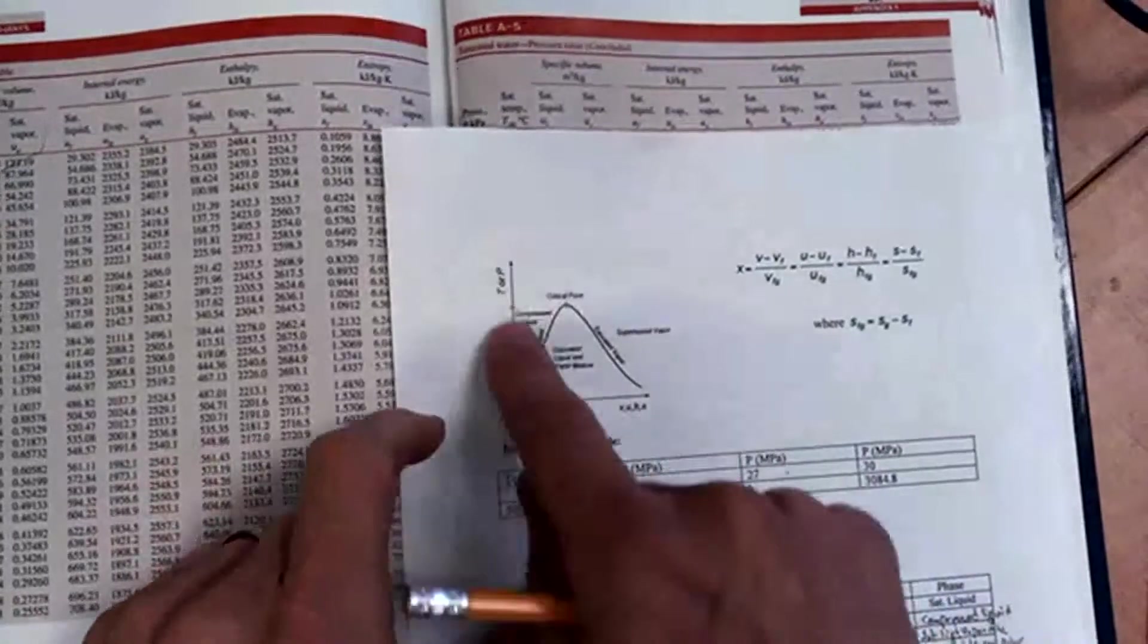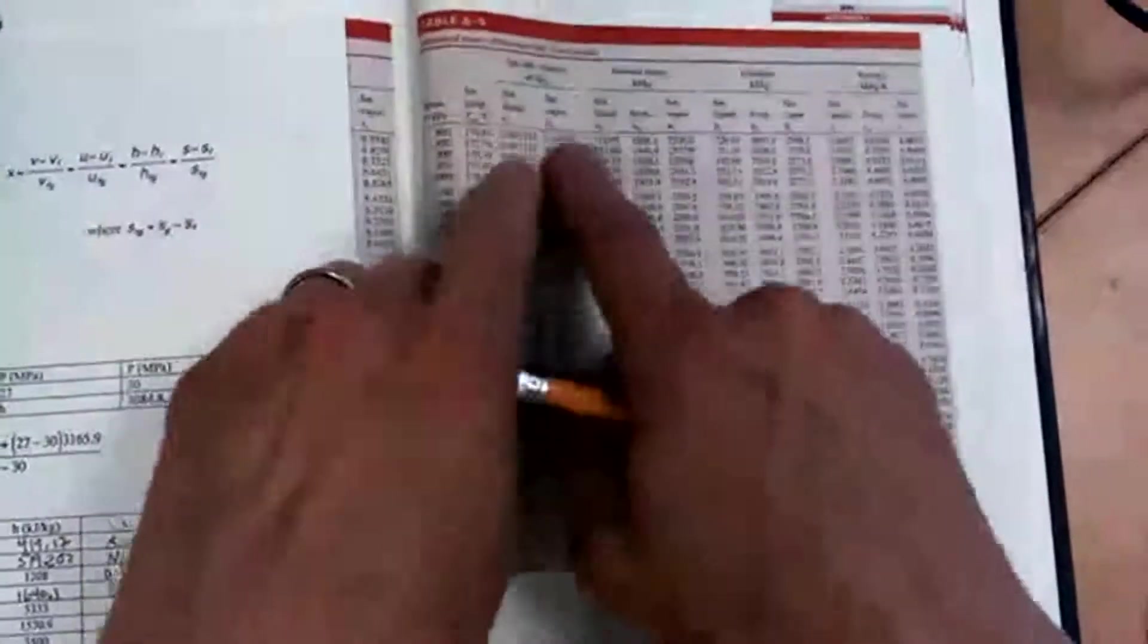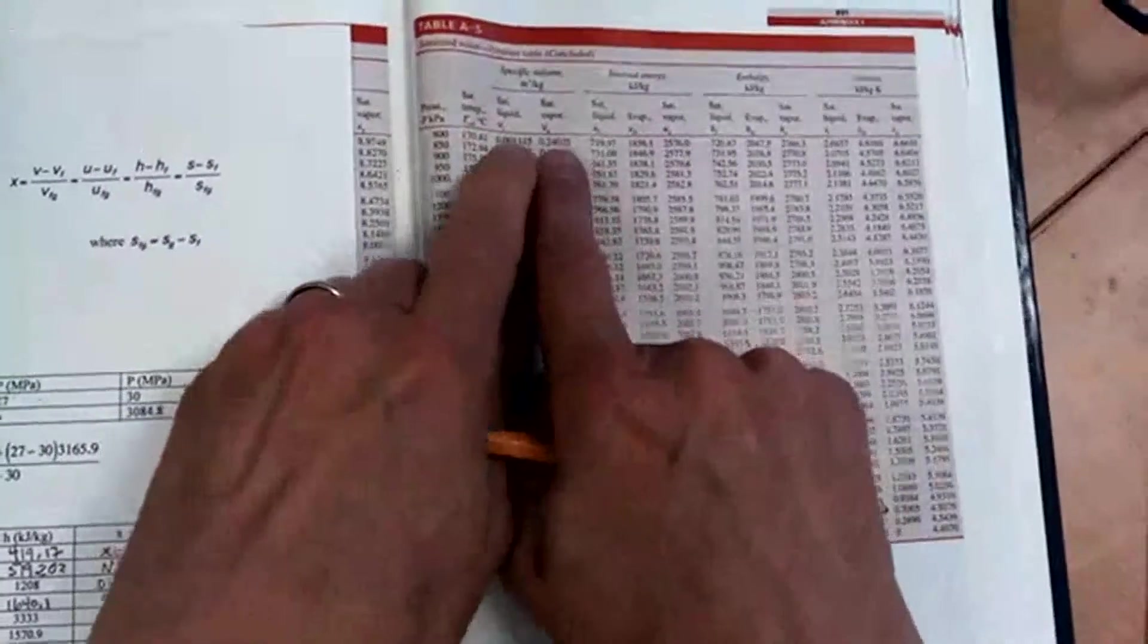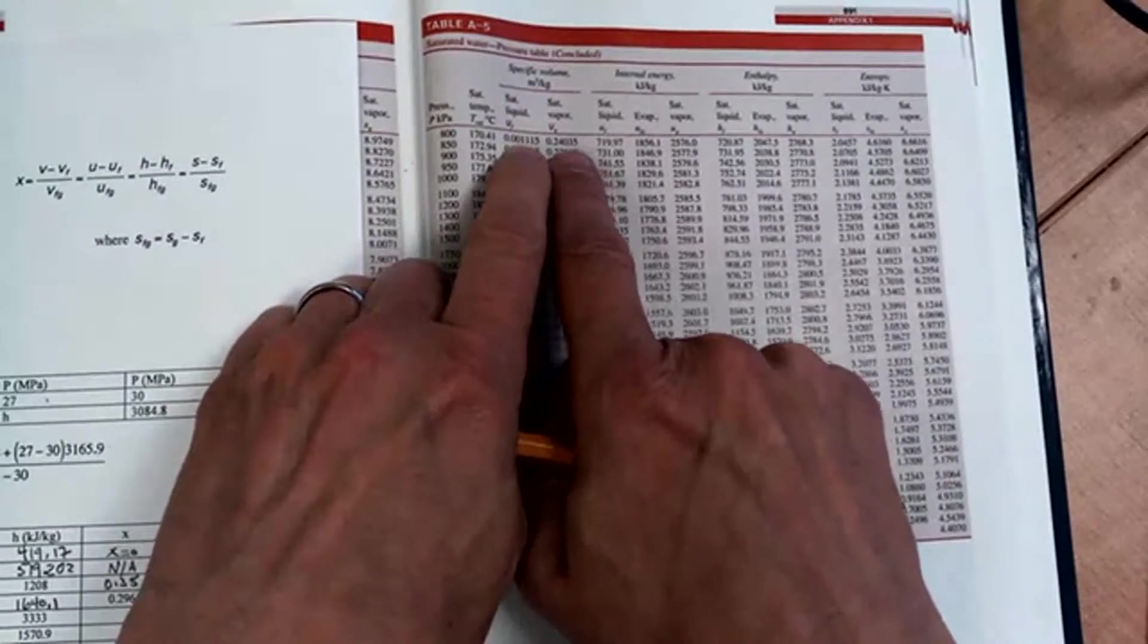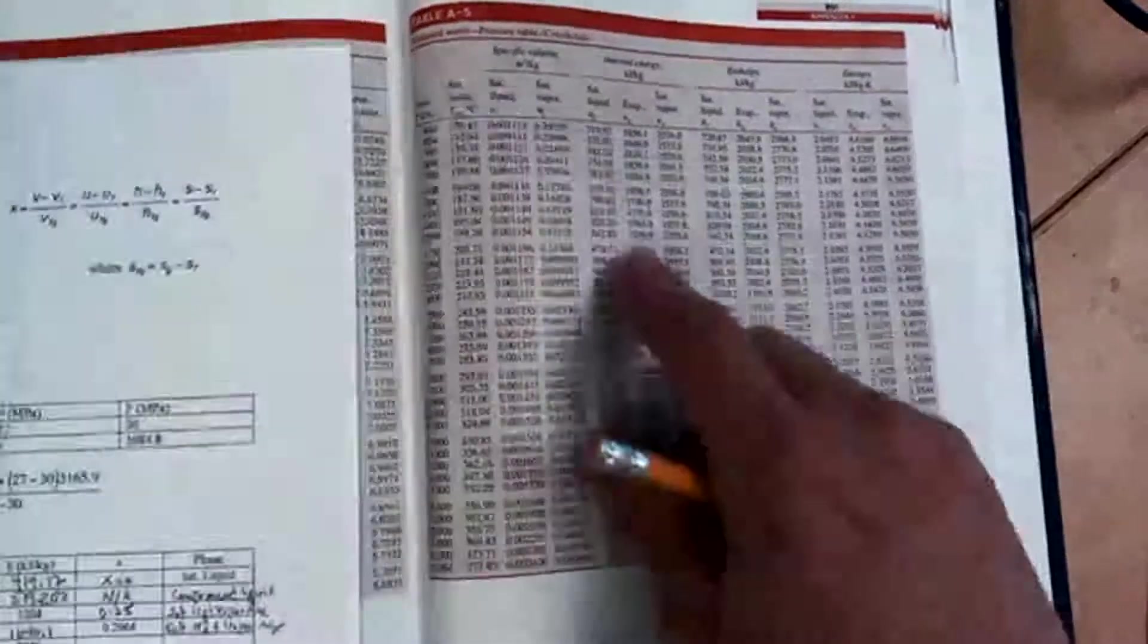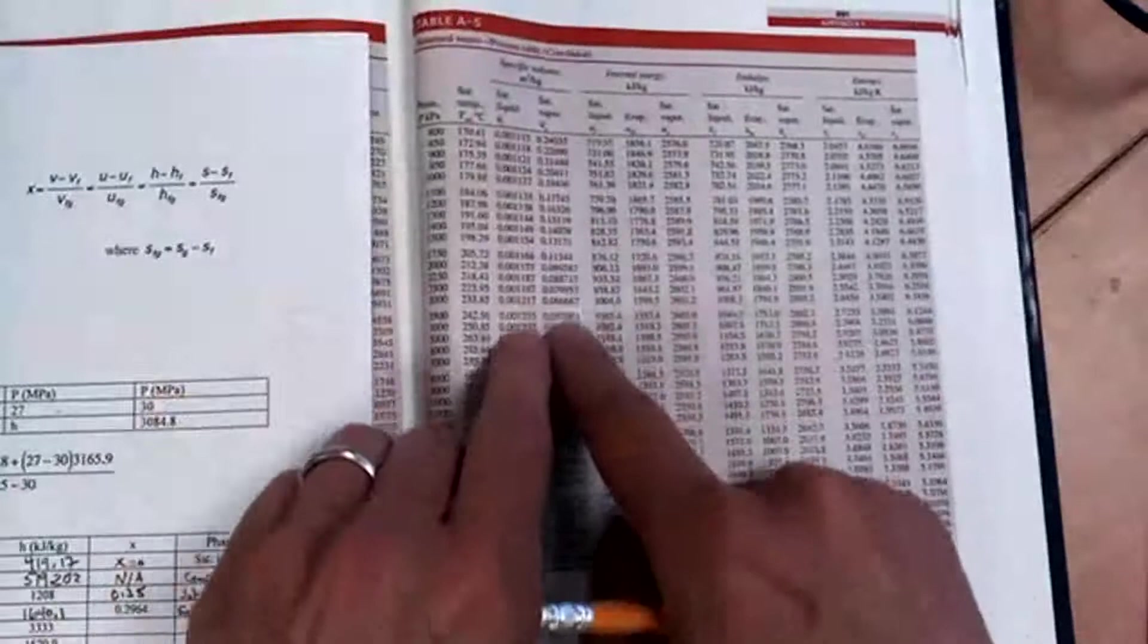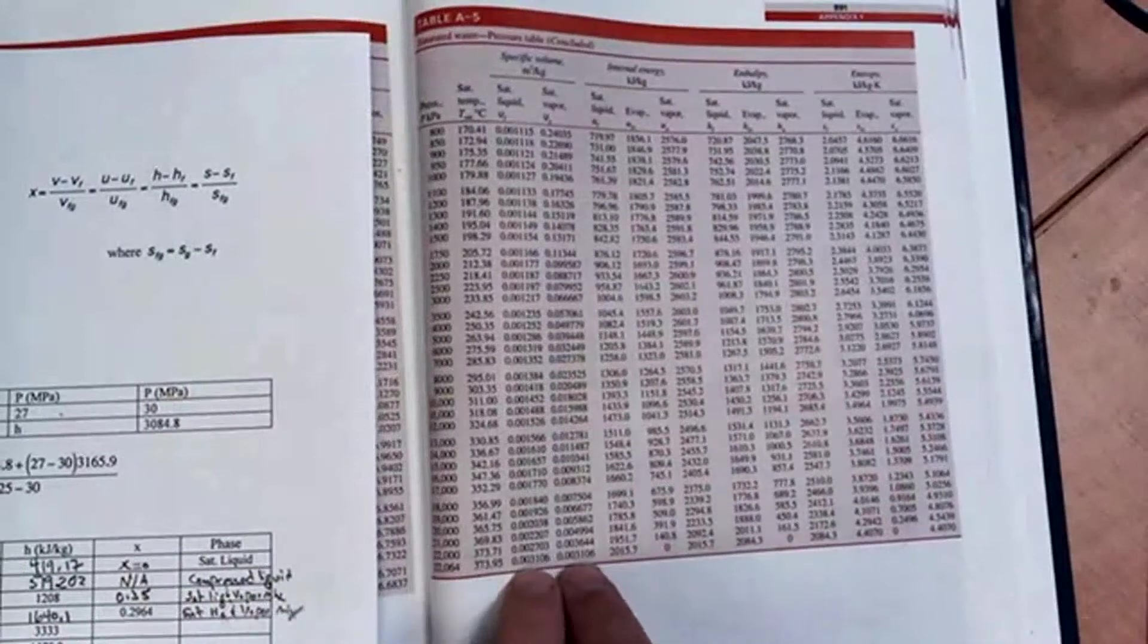As you go up in pressure or temperature, these two saturation lines begin to approach each other. And if you look at this table, you can see that the numbers are quite different, 0.0011115 versus 0.42035. That's because we're over here somewhere. The numbers are far apart. But as we increase the temperature and pressure, these numbers approach each other till at the very bottom, they're exactly the same, 0.003106.